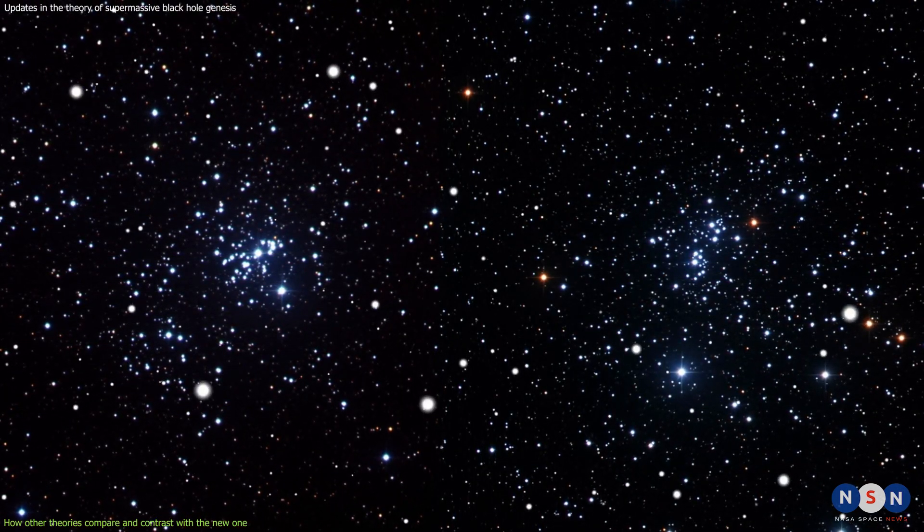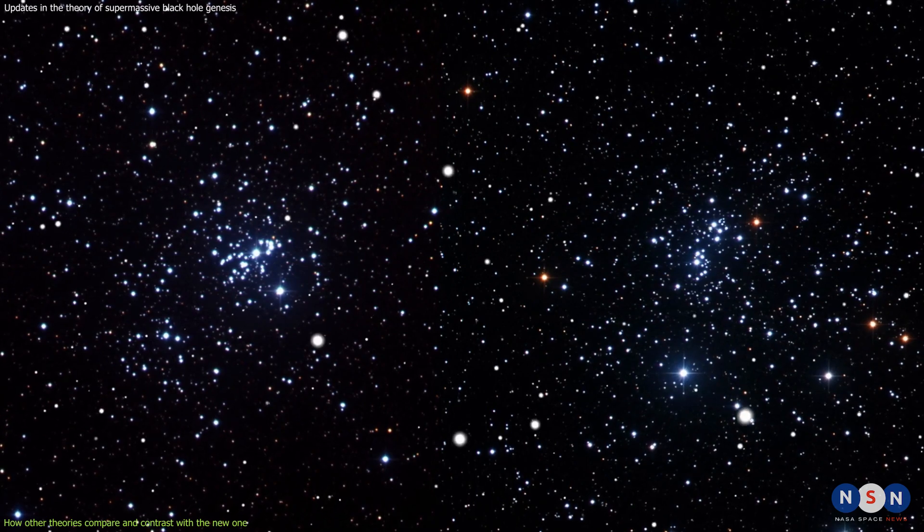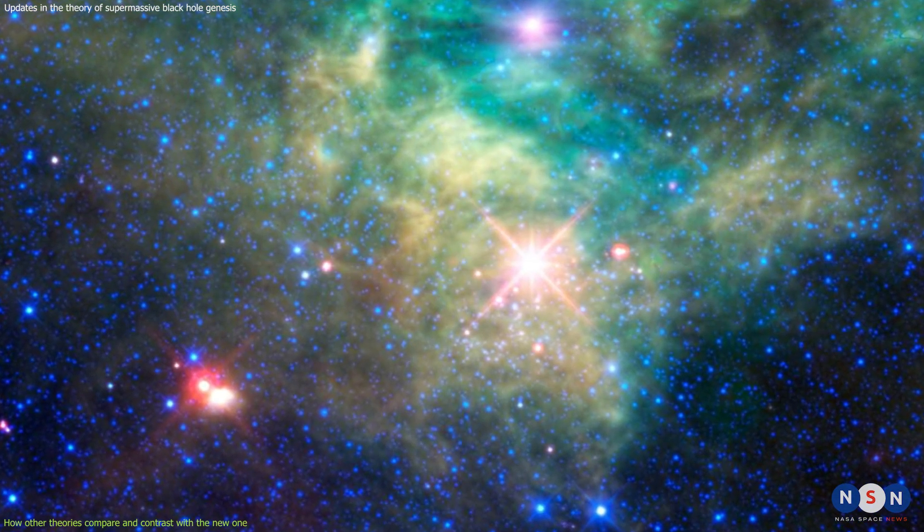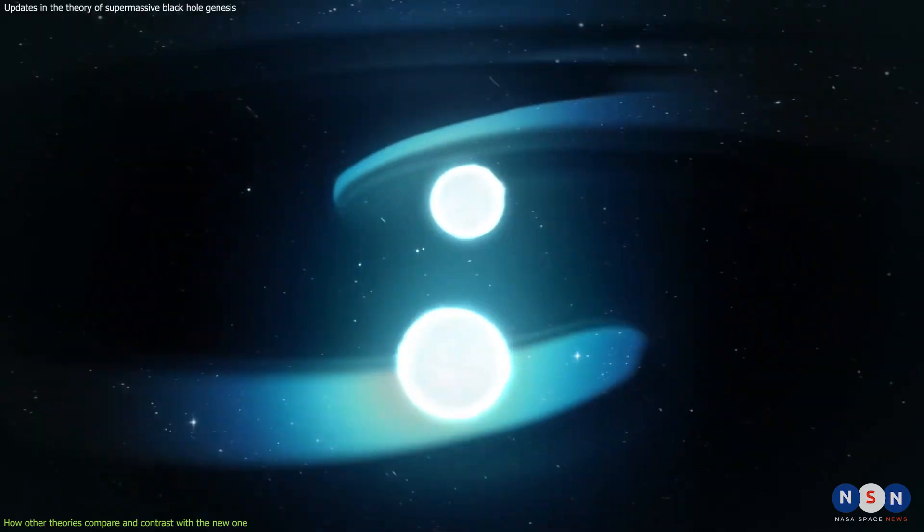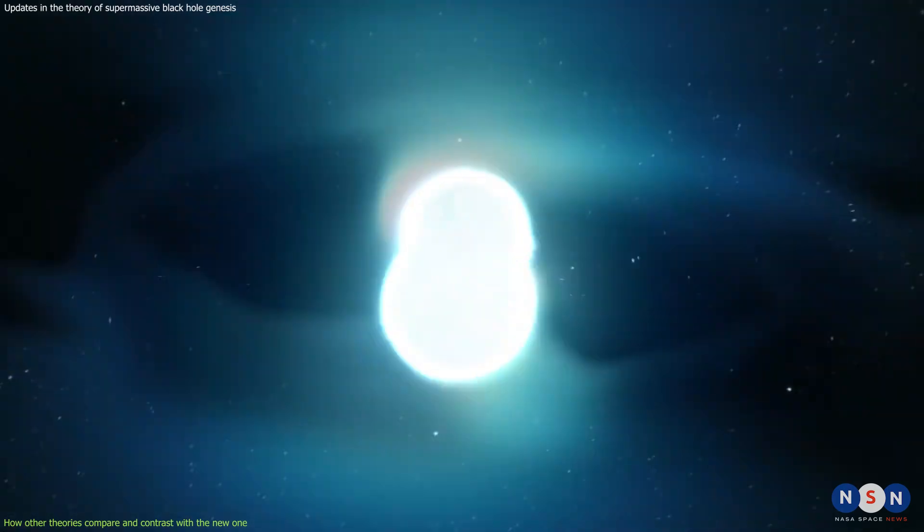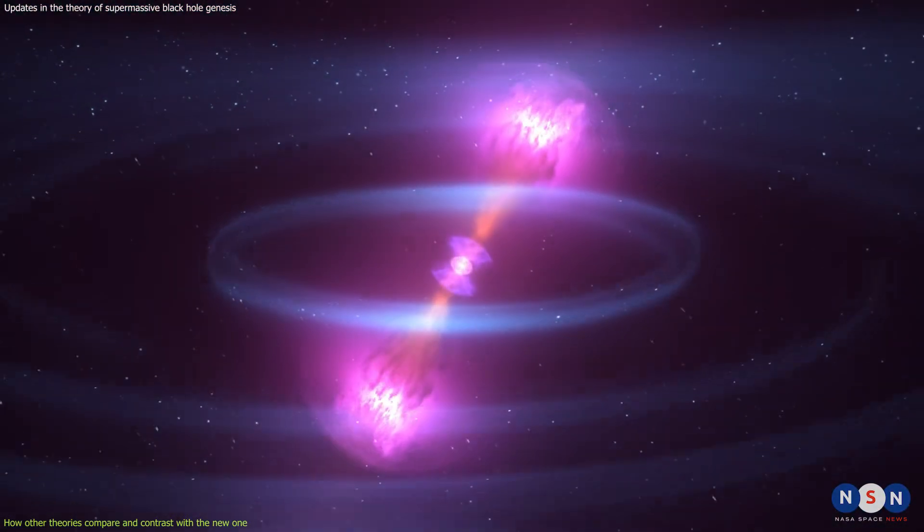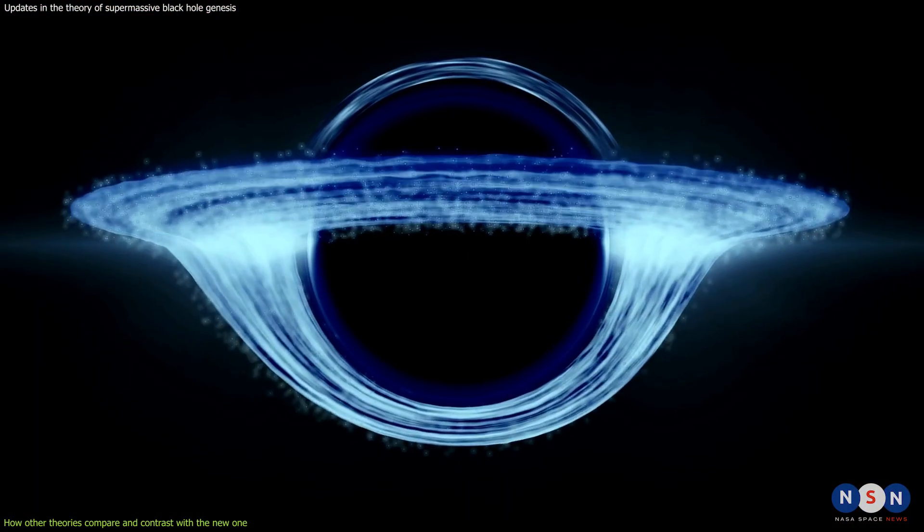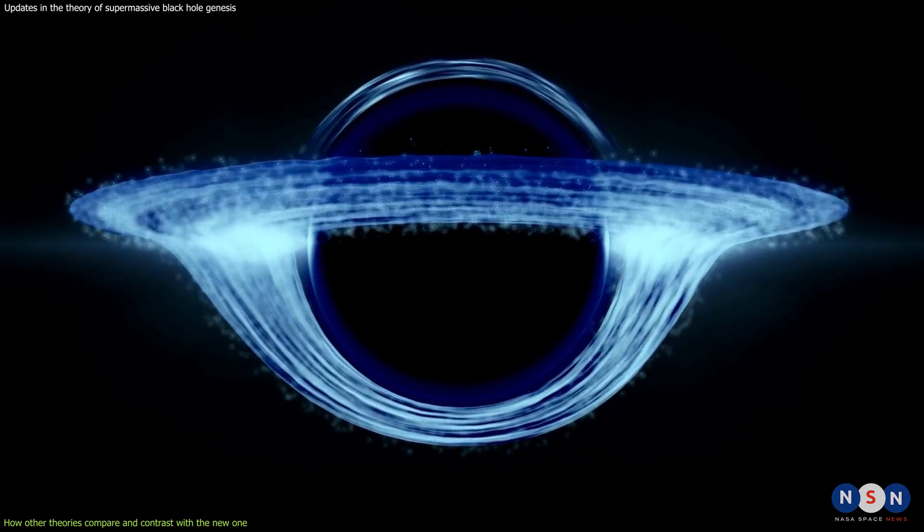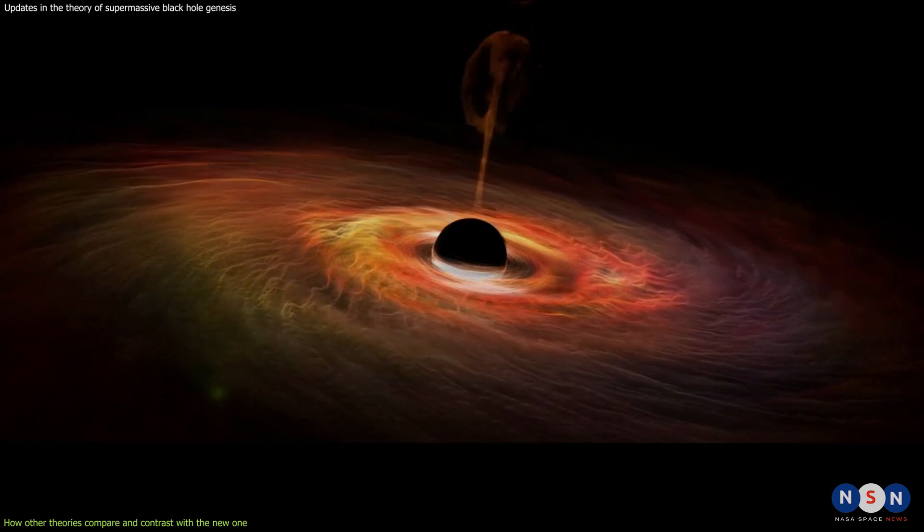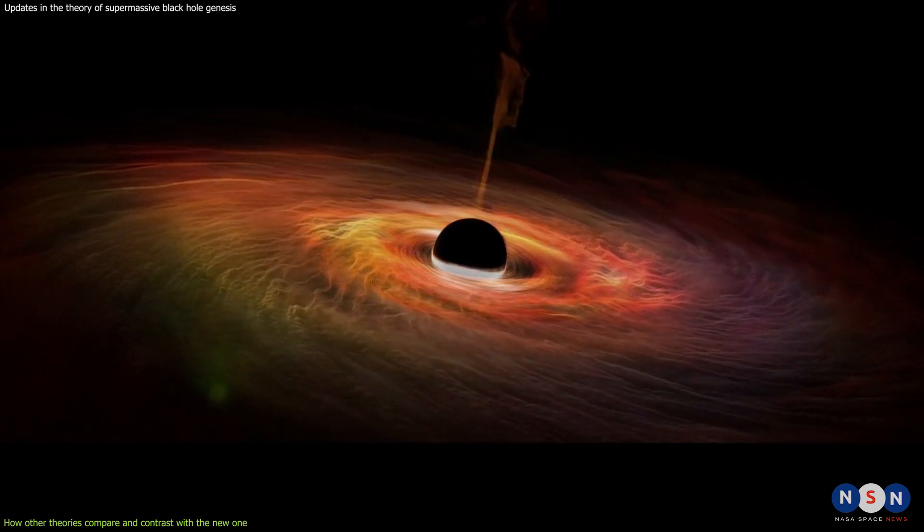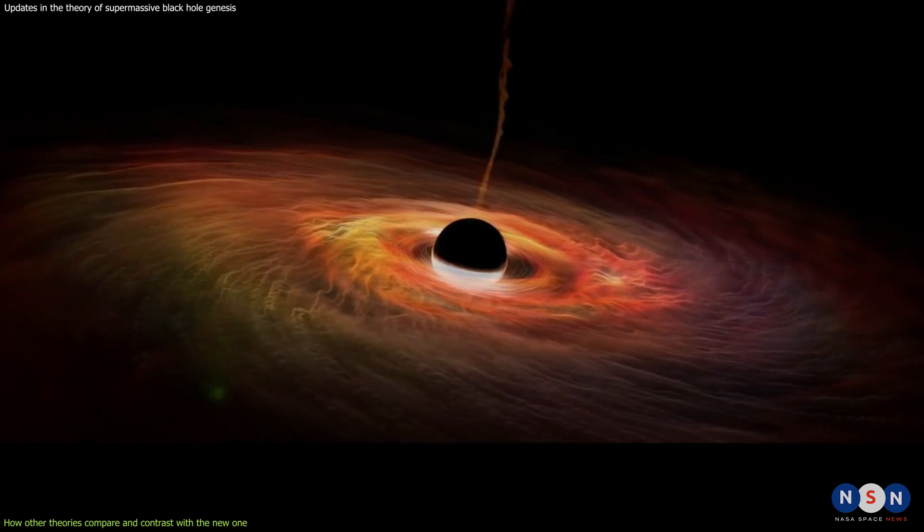Another theory is that supermassive black holes form from the collapse of massive clusters of stars in dense regions of galaxies. These clusters could contain thousands or millions of stars which would interact with each other gravitationally and dynamically. Some of these interactions could result in collisions or mergers of stars, forming very massive stars that could then collapse into intermediate-mass black holes. These black holes could then merge with each other or with other stars or gas clouds, forming larger and larger black holes over time.